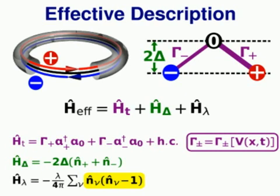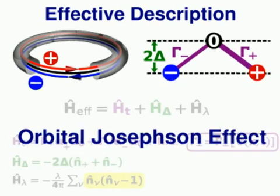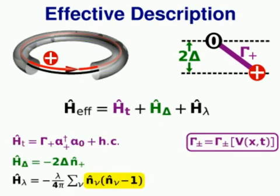A term that accounts for the particle interactions. A central result is that the effective interaction term is such that two particles only interact with each other when they are found in the same mode. Note that this effective Hamiltonian is not time dependent anymore. This effective description is mathematically equivalent to that of an internal or external Josephson junction. This observation and the characteristic of the participating modes motivate the term orbital Josephson effect. A more common two-mode system can be obtained by an accordingly adjustment of the driving field parameters such that either gamma plus or gamma minus vanishes.